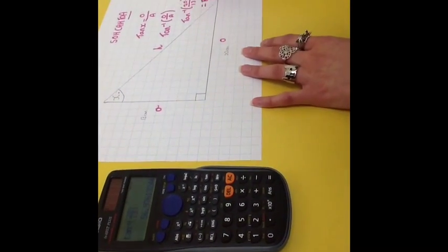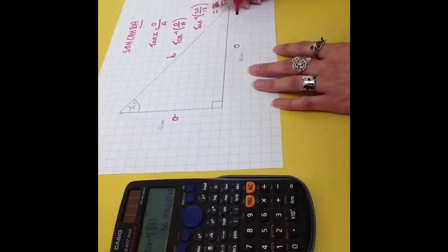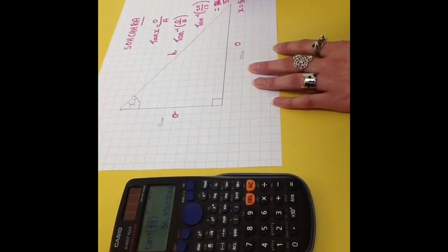So, you get given— So, the angle. Angle x is 57 degrees.